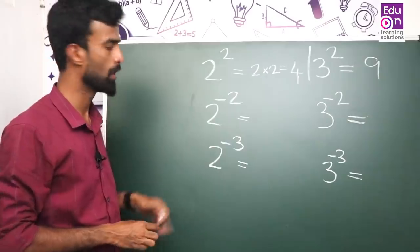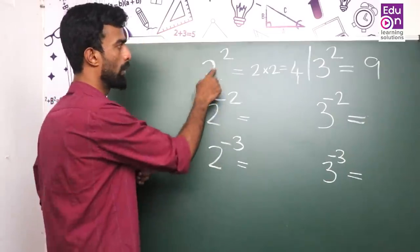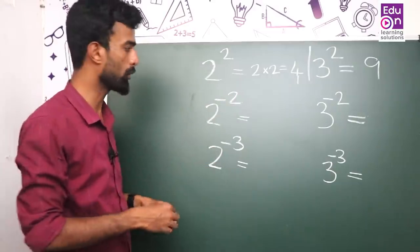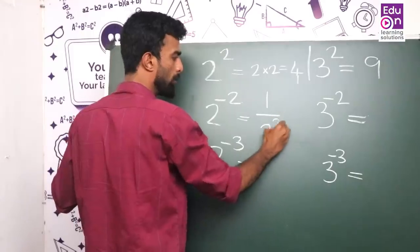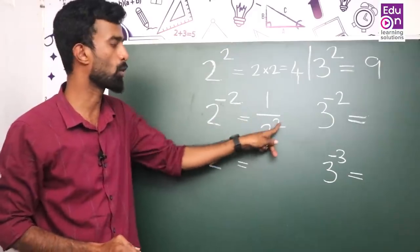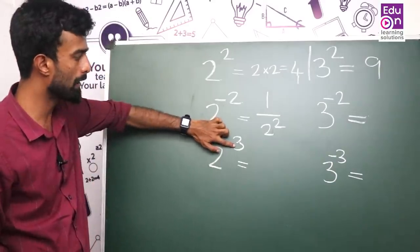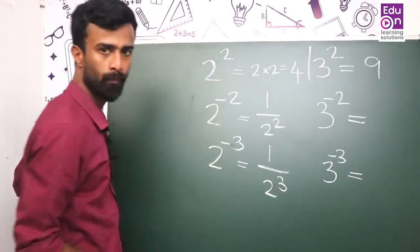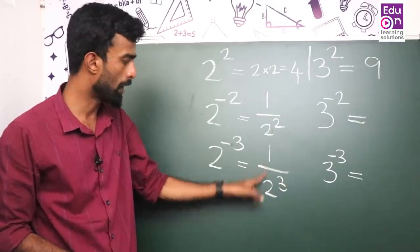2 raised to minus 2 and 3 raised to minus 2. This is the case for negative exponents. 2 raised to minus 2 equals 1 by 2 squared, which is 1 by 4. 2 raised to minus 3 (cube) equals 1 by 2 cube, which is 1 by 8.